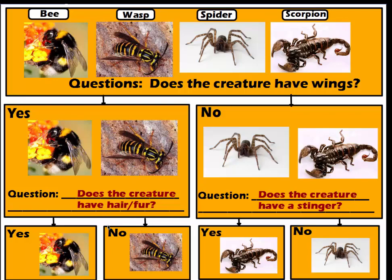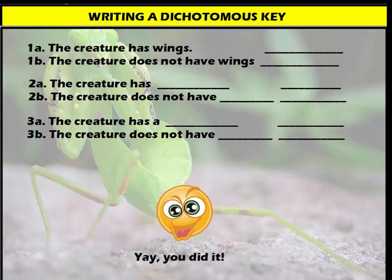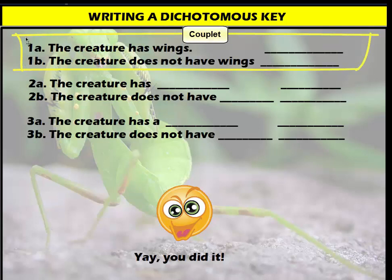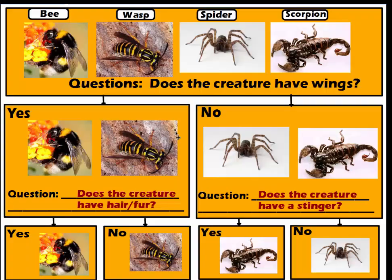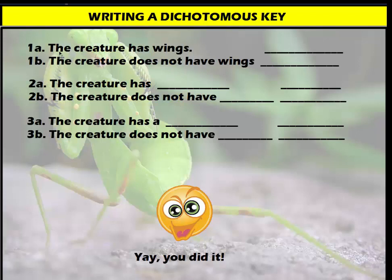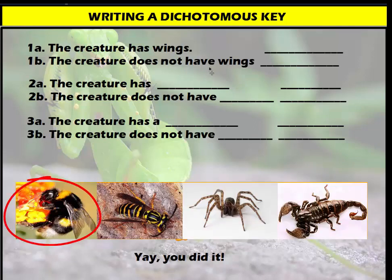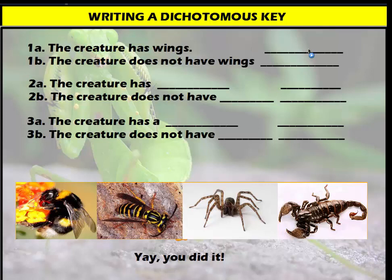Now let's take this sorting chart and turn it into a dichotomous key. A dichotomous key is a tool scientists use to identify organisms based on physical structures. It's composed of a series of couplets — pairs of statements about structures found on organisms. Based on the characteristics an organism has, it provides answers and moves down the key. Our first question was 'does the creature have wings?' — turned into the statements 'the creature has wings' and 'the creature does not have wings.' Since two organisms had wings, we write 'go to two' and move to couplet 2a and 2b.